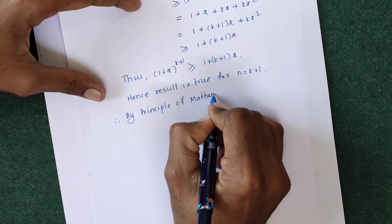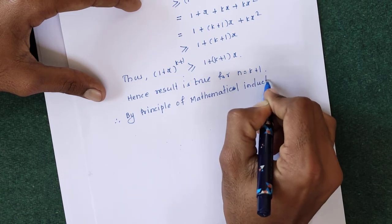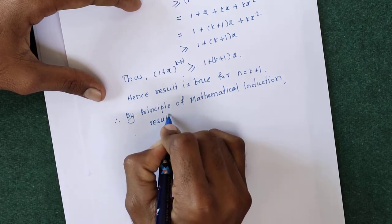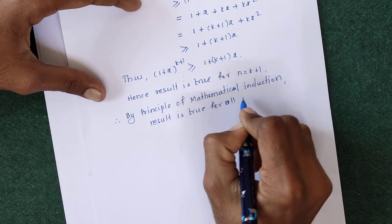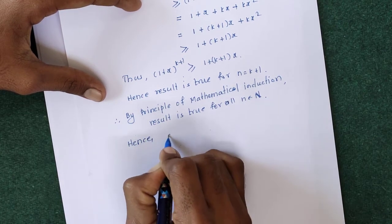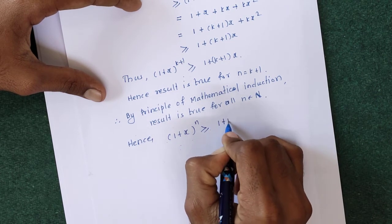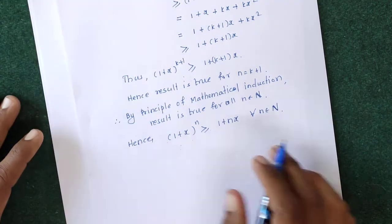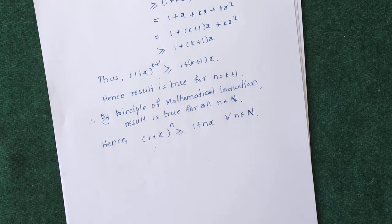By the principle of mathematical induction, the result is true for all n belonging to the set of natural numbers. Hence, (1 + x)^n ≥ 1 + nx for all n ∈ ℕ. This completes the proof of Bernoulli's inequality.